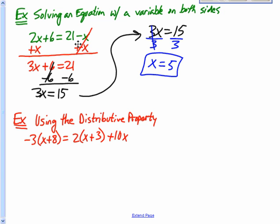All right, let's use the distributive property now. As you could imagine, you're going to distribute first. Then we'll combine like terms. So let's see what we have here. Negative 3 times x is negative 3x. Negative 3 times 8 is a negative 24. 2 times x is 2x. 2 times 3 is a positive 6.